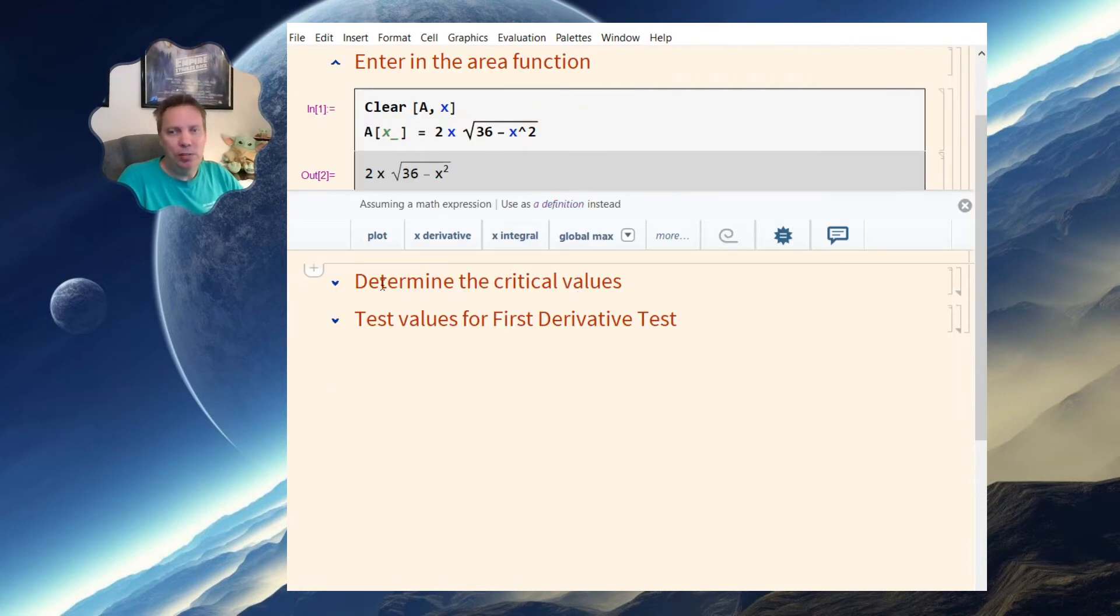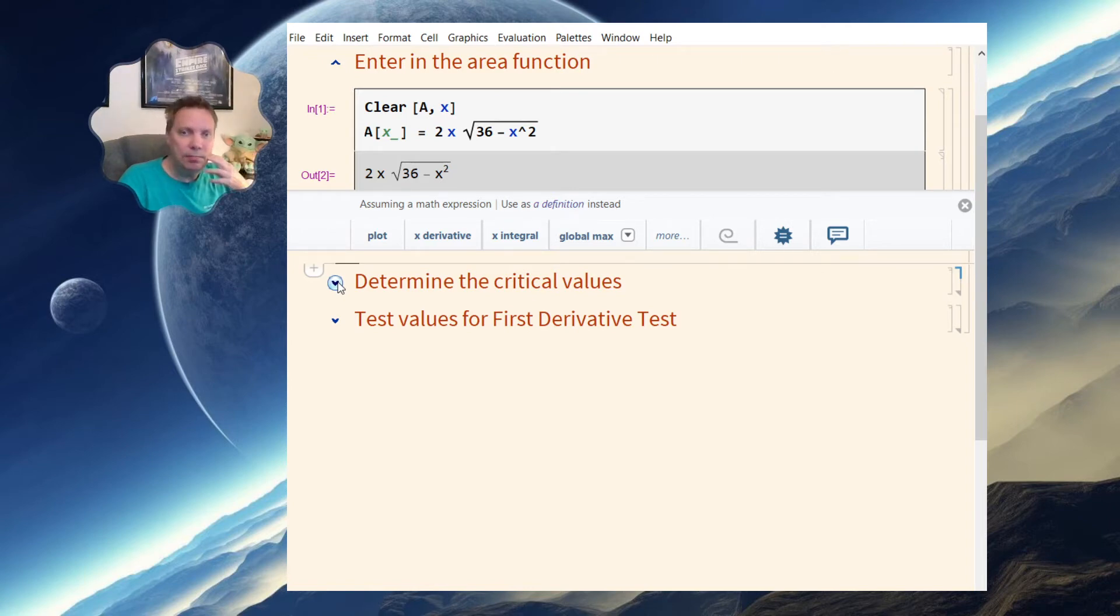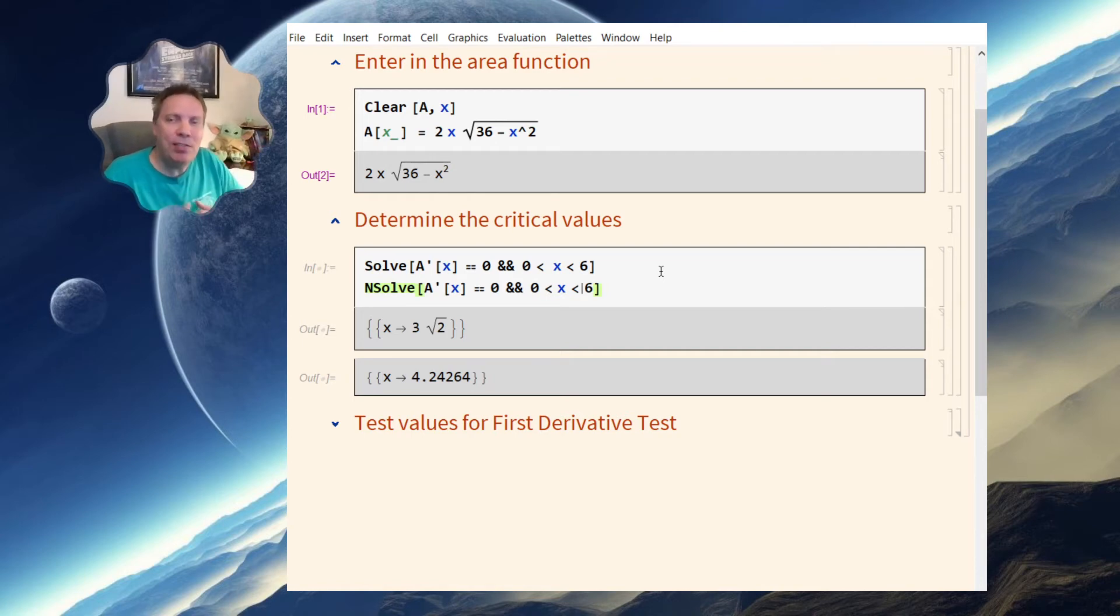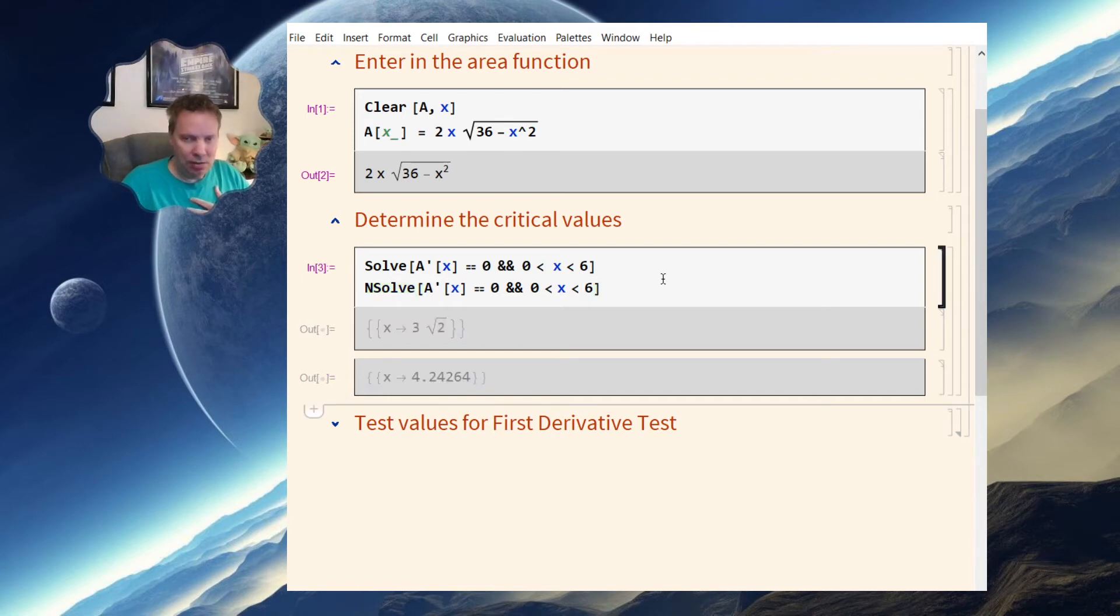Now, how do I determine the critical values? Well, the critical values are when the first derivative is equal to zero or undefined. Well, I am going to first figure out where the first derivative is equal to zero. Setting the first derivative equal to zero, I'm doing it two ways, one with a solve and the other with an n solve. And now notice that the restriction that I have on here is between zero and six. That's because if I look at my circle, x can't be bigger than six because that was the radius of the circle. So if I evaluate these, I wind up getting three root two and four point two four. One's an exact answer and one's an approximation.